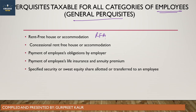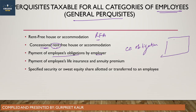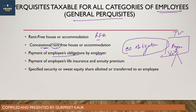Further taxable perquisites include: concessional rate accommodation, payment of an employee's obligations by the employer — for example, if the employer pays for a TV purchased by the employee, that is taxable because the obligation was the employee's. Also included is payment of an employee's life insurance and annuity premium by the employer.